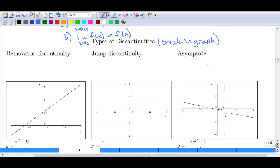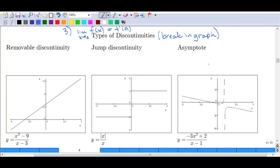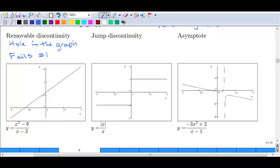There's what is known as a removable discontinuity. And we discussed this earlier. This is what we call a hole in the graph. And this would be the case that it fails rule one up above where f of a just doesn't exist. And so you can see that example here.